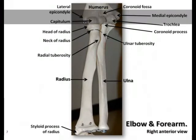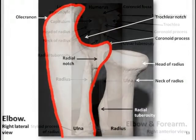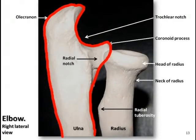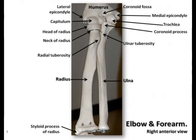The ulna is the largest of the two forearm bones and it's located on the medial side, which is your pinky or little finger side. It's easy to remember because the ulna resembles a crescent wrench in the lateral view. The radius is the smaller of the two bones and it's located on the lateral side, or the thumb side of the forearm.